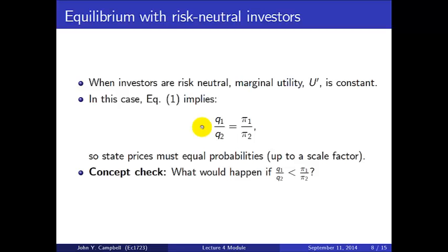This matches the assumption we were implicitly making earlier when discussing coin tosses and the numbers game — we assumed state prices equal probabilities, which follows from risk neutrality. If investors were risk neutral and state prices were not equal to the ratio of probabilities, investors would keep buying the unduly cheap Arrow-Debreu security without limit, with nothing to choke off their demand, and there could be no equilibrium with those prices.